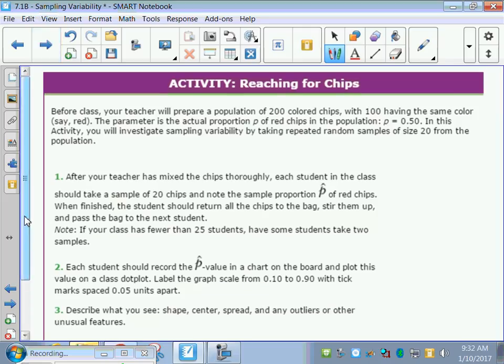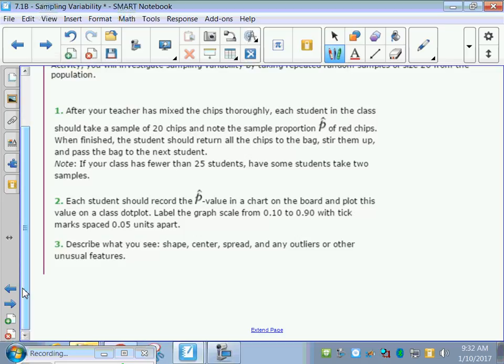After your teacher has mixed the chips thoroughly, each student in the class should take a sample of 20 chips and note the sample proportion. Notice we're talking P hat. P is the true parameter, which is 0.5, 100 out of 200 are red. When you take out your P hat, you might get 11 out of 20, or you might get 7 out of 20. When finished, the student should return all the chips to the bag, stir them up, and pass it to the next student.